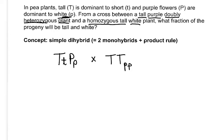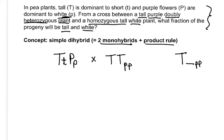These are independently assorting genes. What fraction of the progeny will be tall — meaning T-something — and white, meaning little p little p? Let's just treat this like two monohybrids and then apply the product rule to put them together. Let's look at the tall gene first.